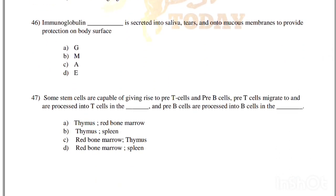Immunoglobulin dash is secreted into saliva, tears and onto mucous membranes to provide protection on the body surface. Options: IgG, IgM, IgA, IgE. Correct answer is option C, immunoglobulin A.